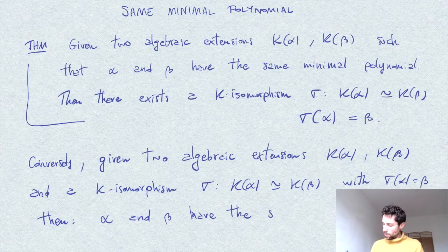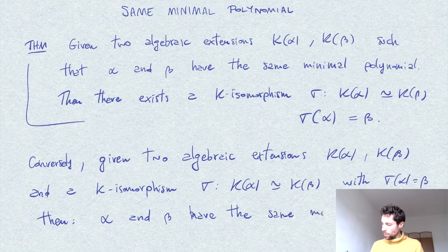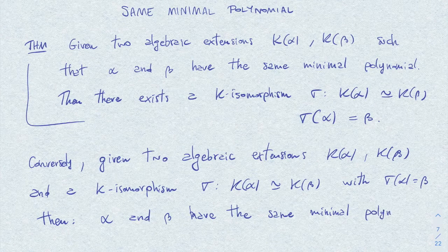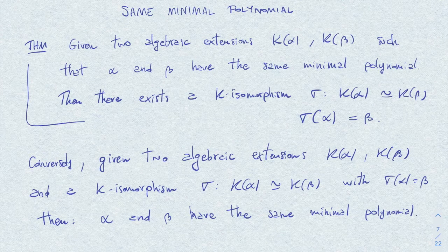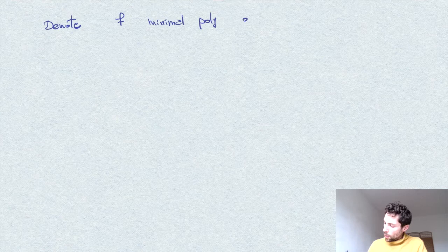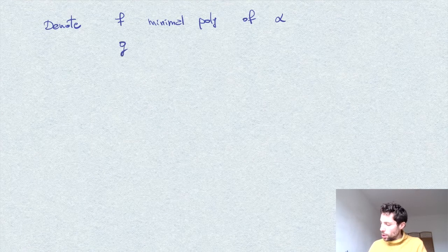Let's prove this fact. Let's denote by f the minimal polynomial of α, and similarly by g the minimal polynomial of β.